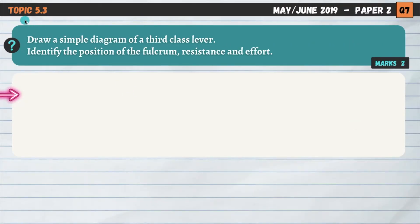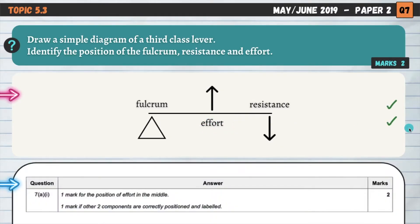Question number three, topic 5.3 again. Draw a simple diagram of a third class lever. And this is from the second paper now in the May-June 2019 series. So a different paper, but essentially the same question that we answered just a moment ago, but this time for a third class lever. And again, we need to identify the position of the fulcrum, the resistance, and the effort. And for the third class lever, it doesn't matter if you draw the fulcrum on the left or the right, the resistance on the left or the right. But the important thing here is that effort is in the middle. And that's all we need to remember, essentially, to get the three components in the right order. So one mark for the position of effort in the middle, and one mark if the other two components are both correctly positioned and labelled.